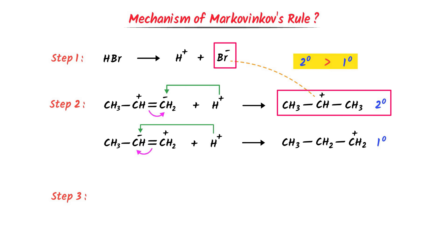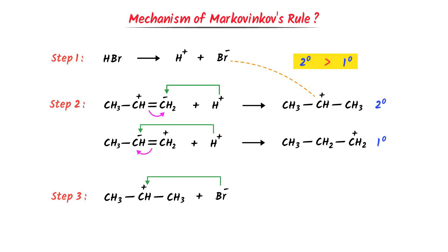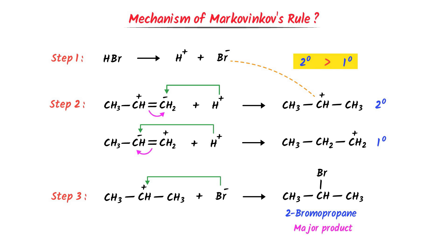In the third step, I take the second degree carbocation and place it here. I take the negative bromine of acid halogen and place it here. The negative bromine attacks on the positive carbon. We get CH3–CHBr–CH3. This is 2-bromopropane, and it is the major product. Thus this is the complete mechanism of Markovnikov's rule.